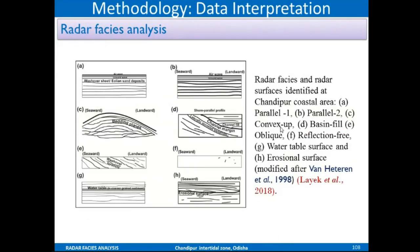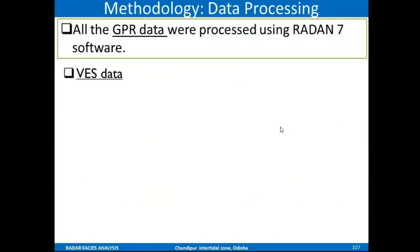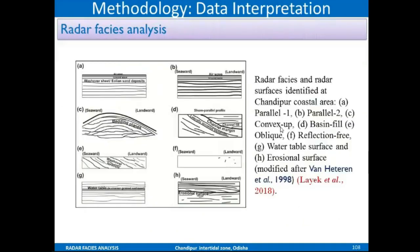Radar facies is the set or assemblages of radar reflections. If you see parallel lines like this, then I classify them as parallel two features. The parallel lines will give you the parallel two features.